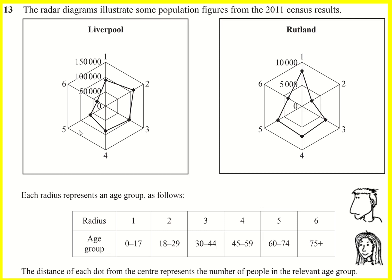This question looks at two radar diagrams, and you may not be really familiar with them — you might have glossed over them in the A-level. Whereas histograms are not completely intuitive when you first look at one, radar diagrams you can kind of see what's going on. If you've played football computer games, they'll often have player profiles with radar diagrams, or something like Pokémon even — these are some other examples where radar diagrams occur.